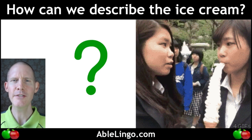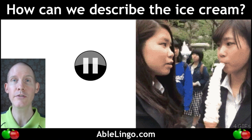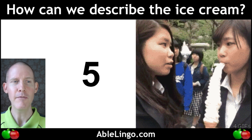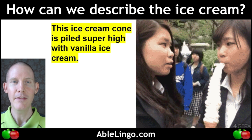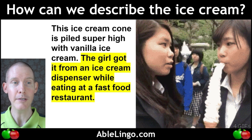Next question: how can we describe the ice cream? Pause the video and come up with your answer. My answer: this ice cream cone is piled super high with vanilla ice cream. The girl got it from an ice cream dispenser while eating at a fast food restaurant.